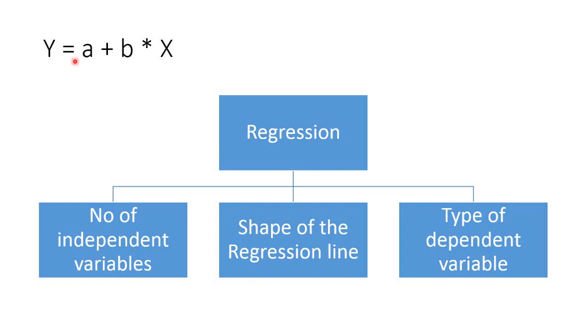In a regression equation, y equal to a plus b multiplied by x, x is known as the independent variable and y is known as the dependent variable, that is, y depends on x.